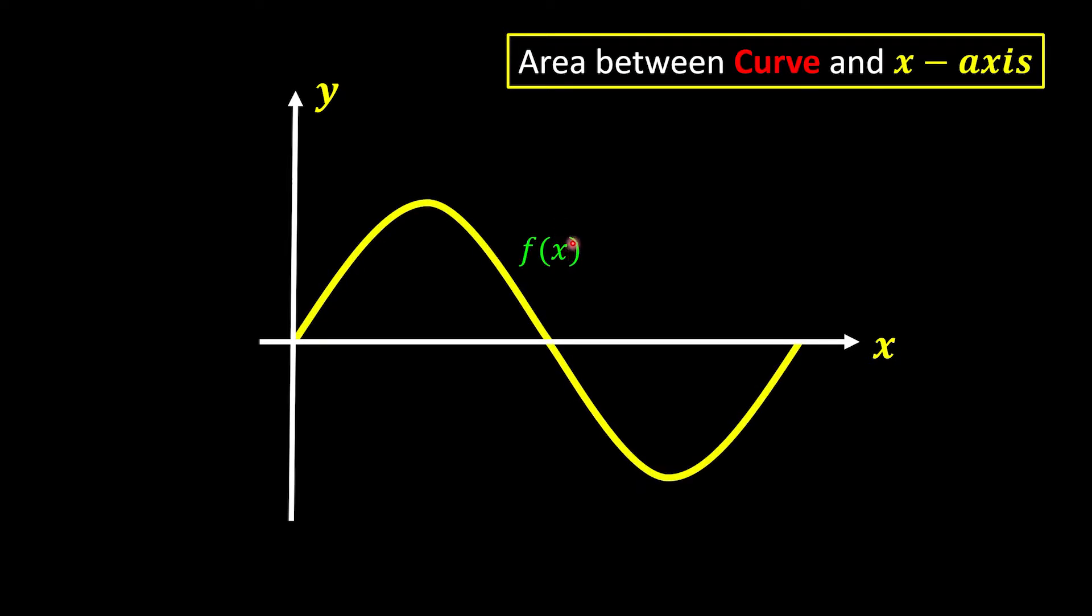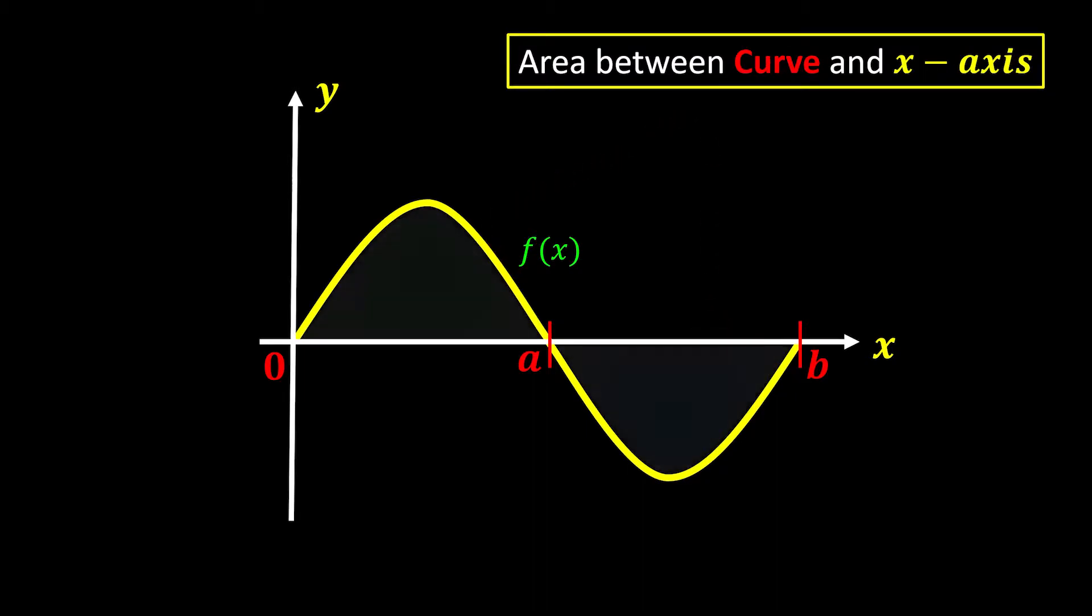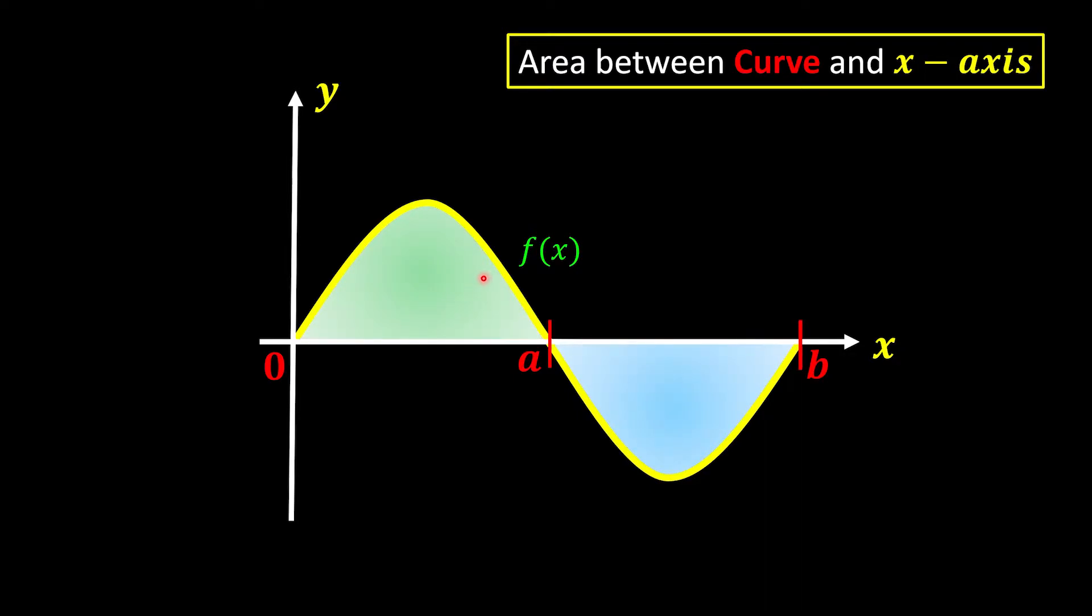Let's say we have a curve of f and we have the x-intercept of 0, a and b. In order to find the area between the curve and x-axis, we're going to check the region first with blue color and green color. And we're going to learn how to write the notations by using definite integrations.